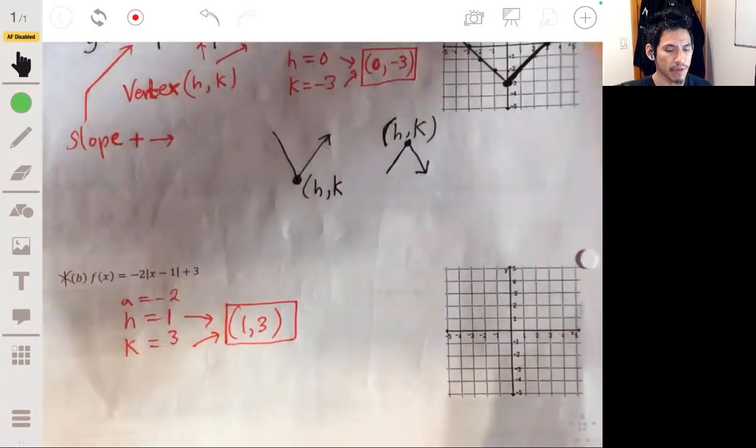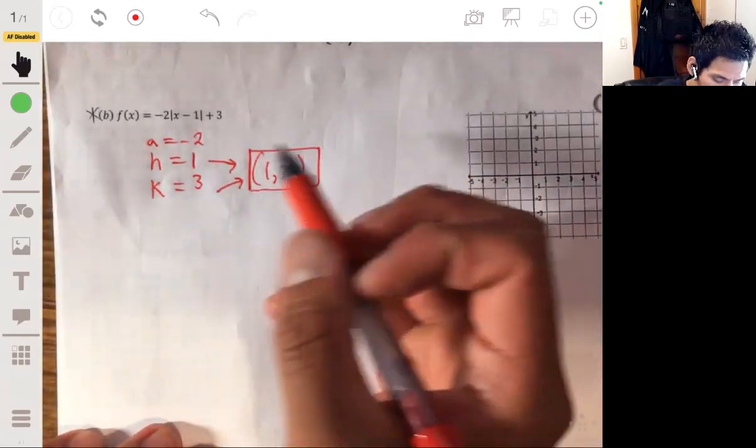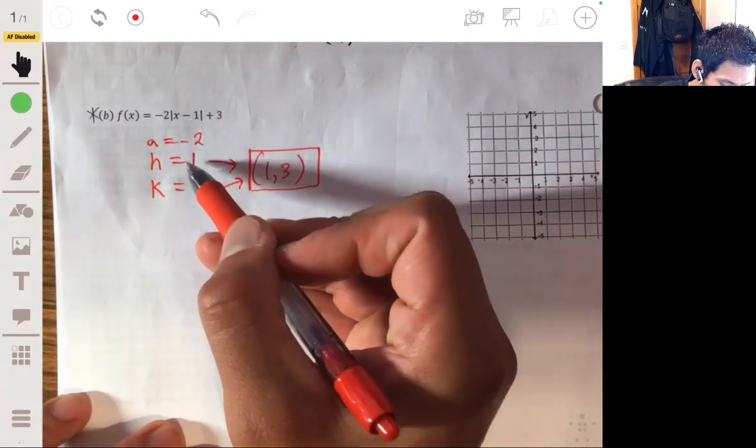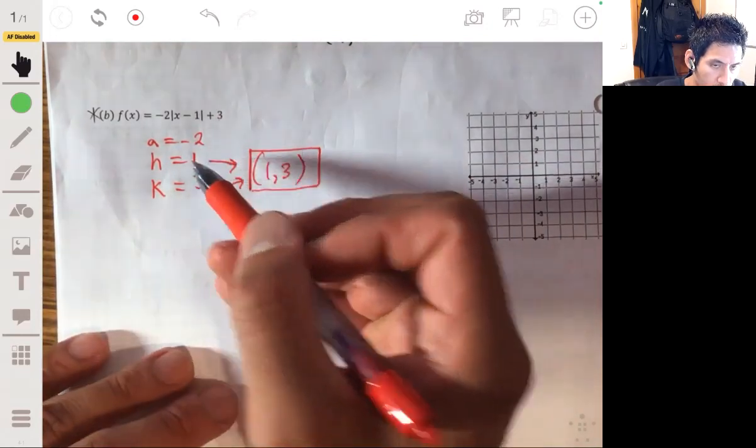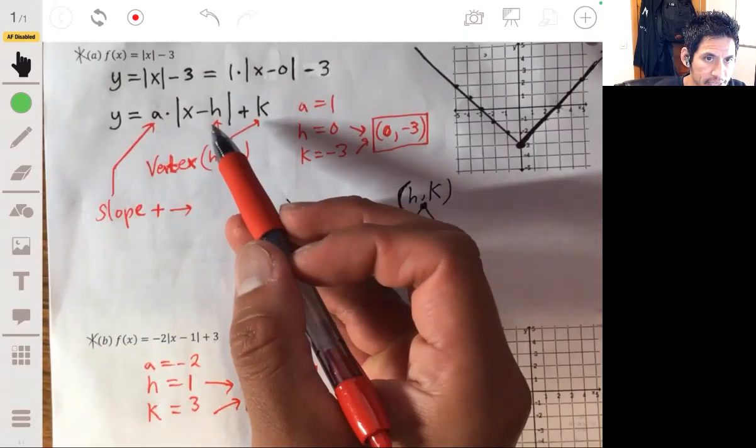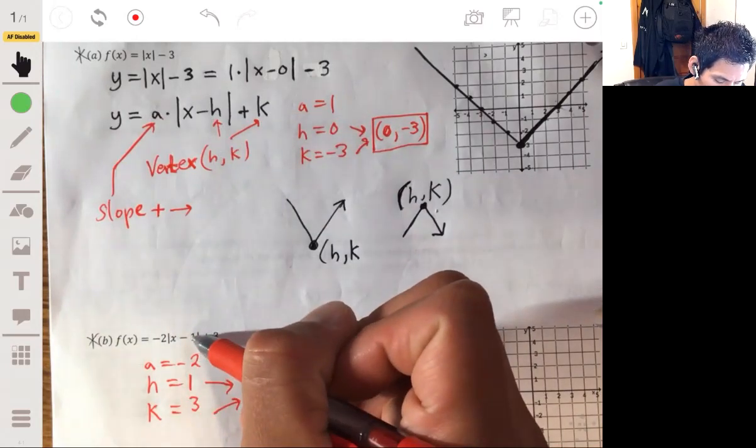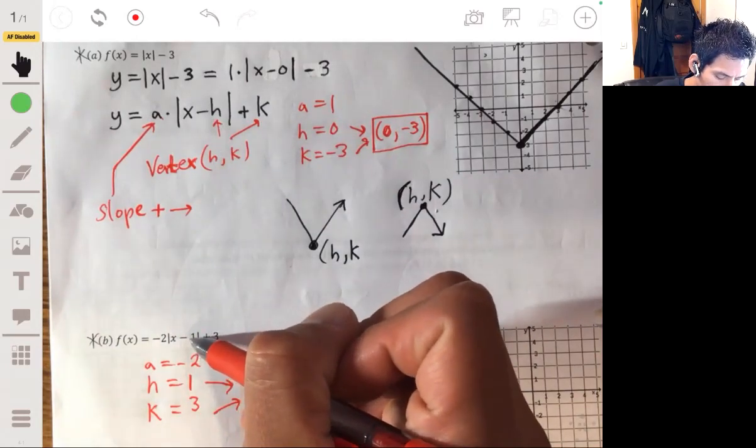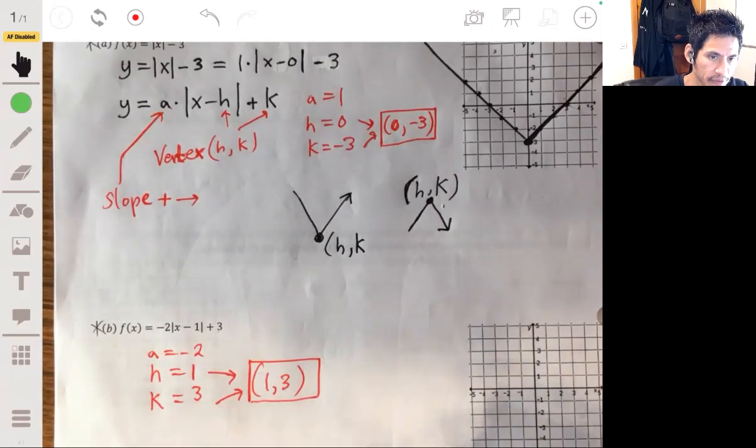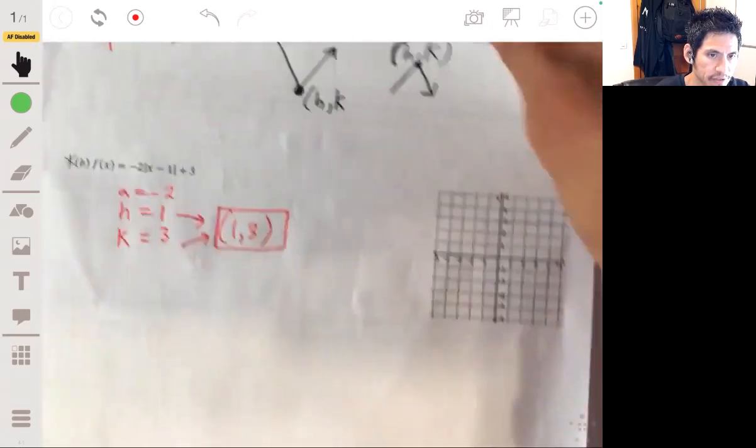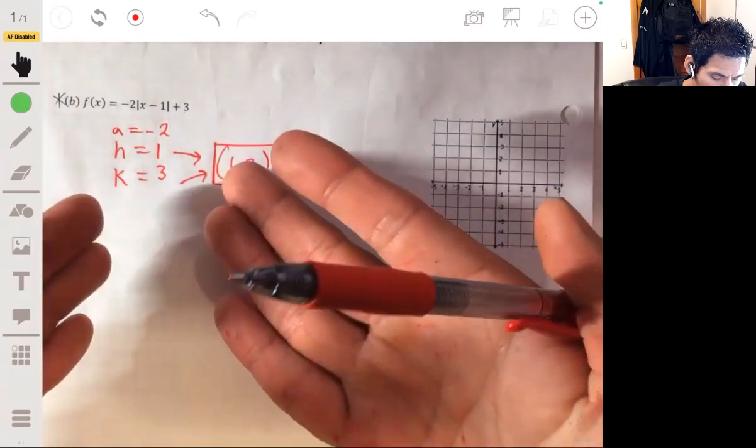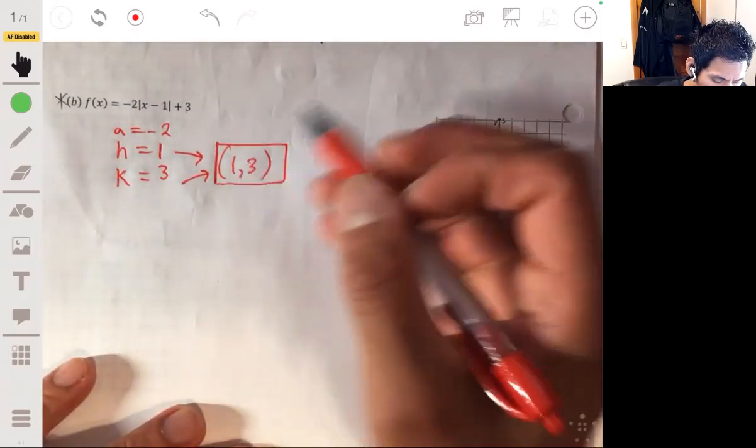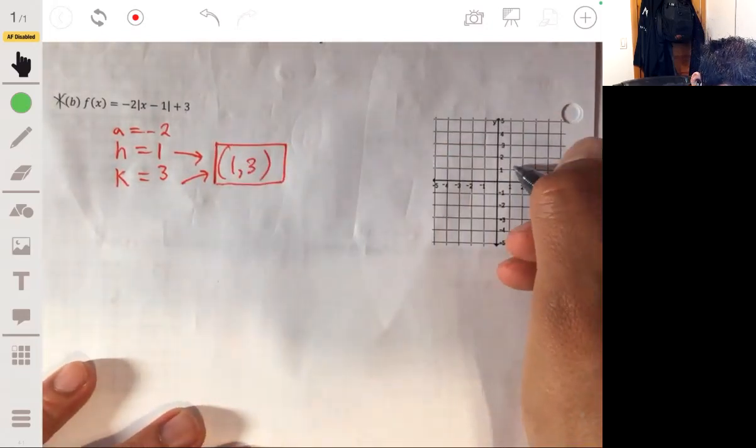And so the vertex is at one three. Now the common point where students sometimes get confused is, you know, it's x minus h - they'll think oh it's negative one. But it's literally x minus h, so whatever that value is is going to be one. If it was plus one, it'll be negative one. But don't overthink it because that can confuse students.